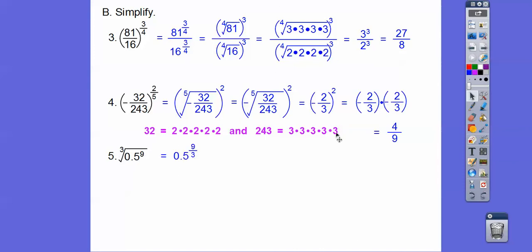And 9 over 3 is 3, so 0.5 to the 3 power, 0.5 times 0.5 times 0.5, 0.125.